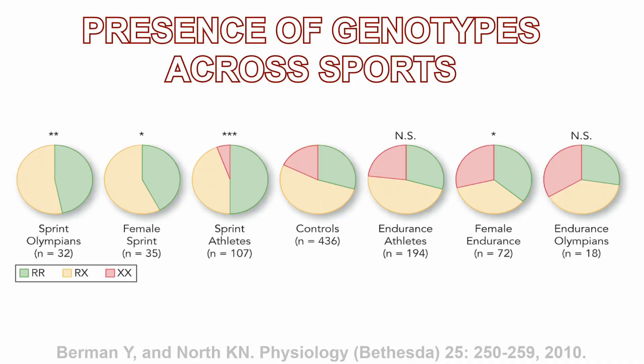Here is an amazing diagram that shows the different genotypes present in elite athletes across a variety of sports. We can see that the ACTN3 577XX genotype is much more prevalent in endurance olympians, whereas at the other end of the spectrum — the sprint olympians — they do not have the XX allele at all.